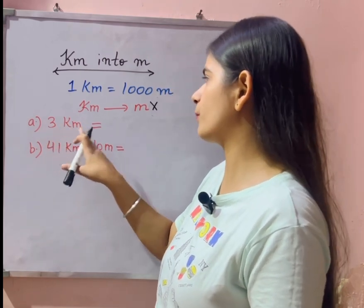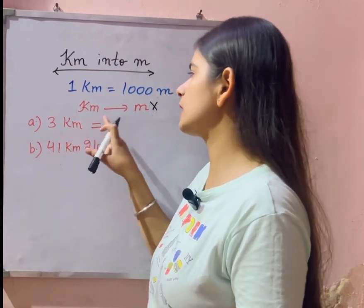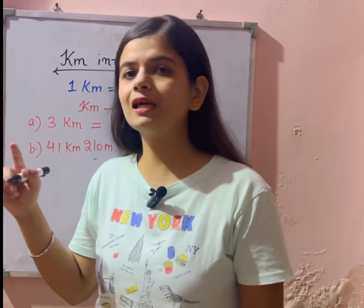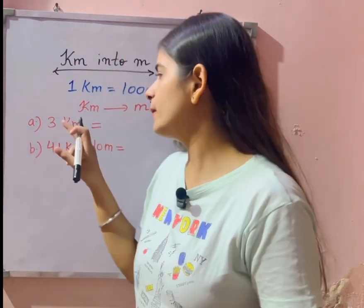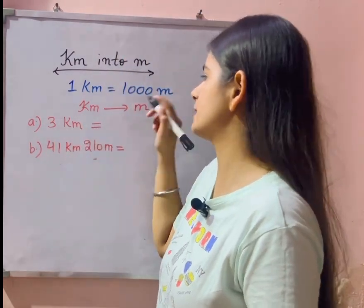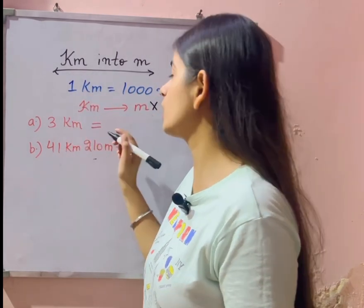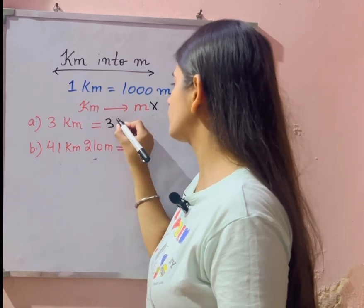kilometer ko aapko meter me convert karna. So meter me convert karne ke liye aapko kya karna padega, unse multiply karna padega. Ab baat aati multiply kis se kare. Multiply hum karenge thousand se. Kyun? Kyunki ek kilometer me thousand meter hote, to three kilometer me kitne meter? So for that what do you have to write: three